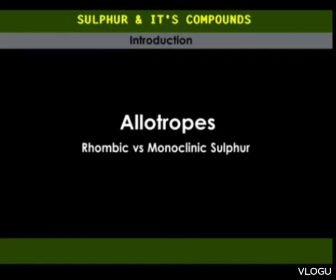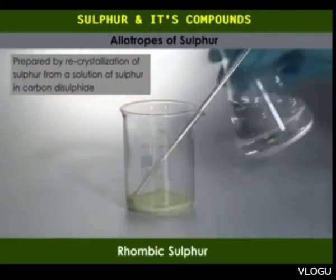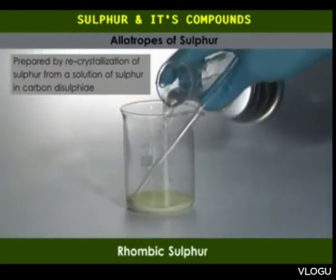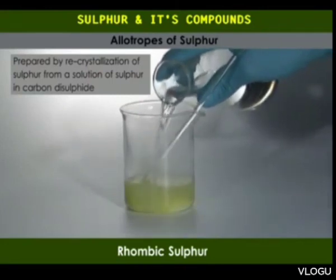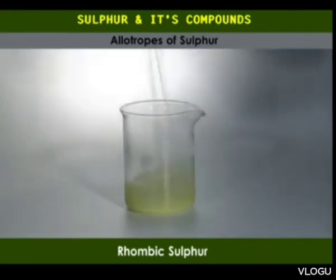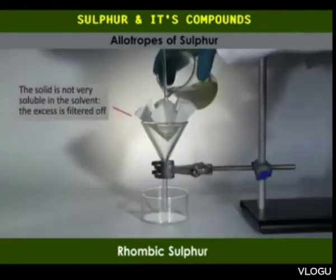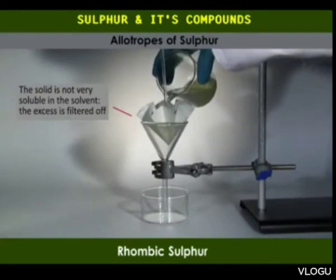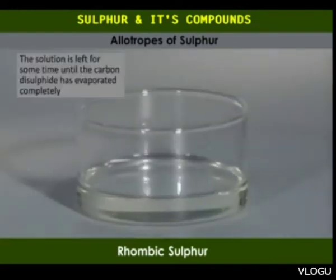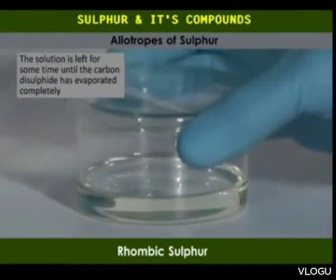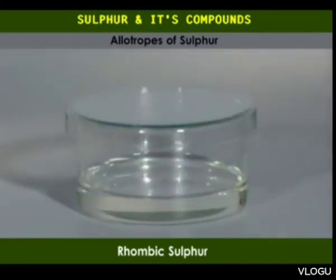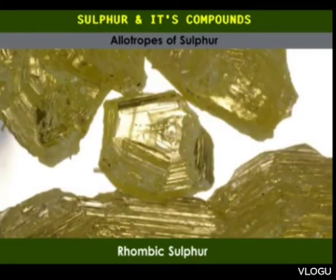Both forms are made up of pure sulfur but differ in the shape and heat stability of their crystals. Rhombic sulfur can be prepared by recrystallization from a solution of sulfur in carbon disulfide. The solid is not very soluble in the solvent and the excess is filtered out. The solution is left to stand to allow carbon disulfide to evaporate completely.